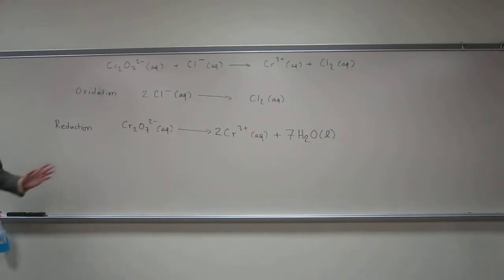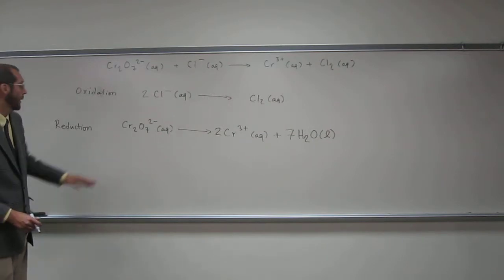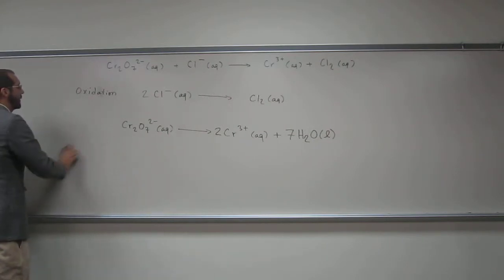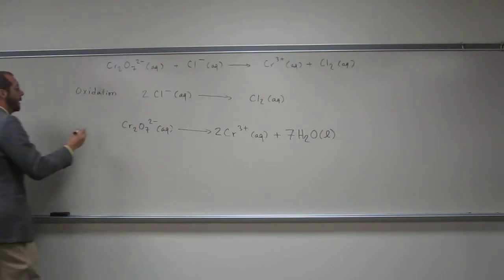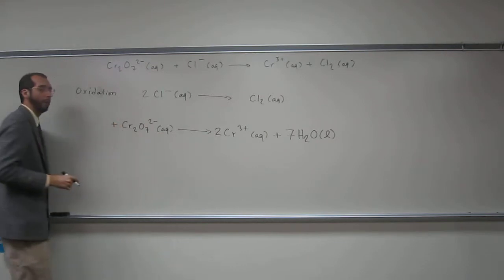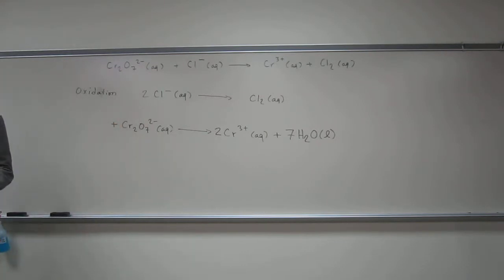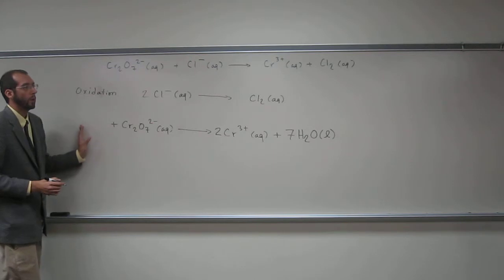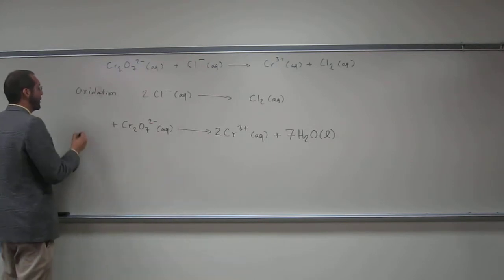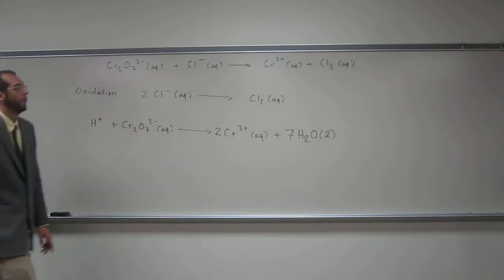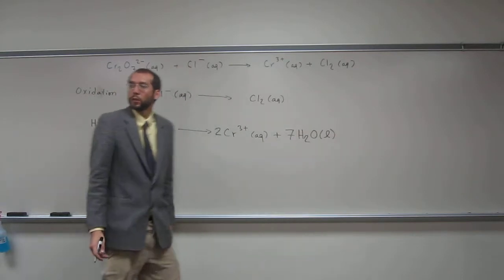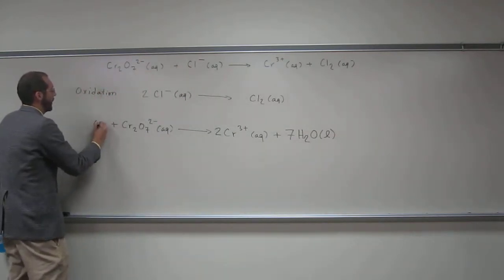Now hopefully you see that the hydrogens are not balanced, so we're going to have to do something about that. When we're talking about acids, the H⁺'s are the acid component of the reaction. So that's what we're going to put on this side of the equation — H⁺'s. We need seven times two of them, which is 14, and we're going to put those on this side.